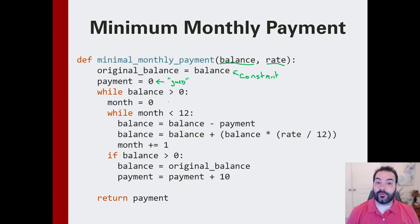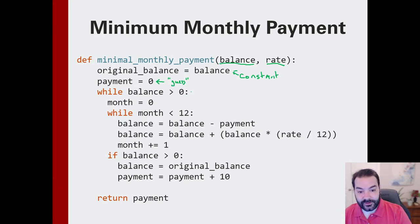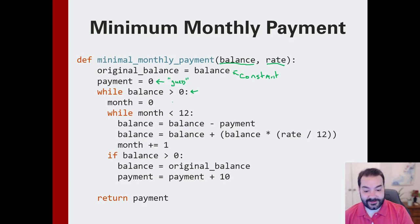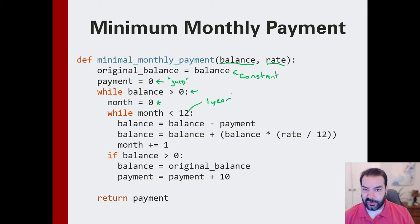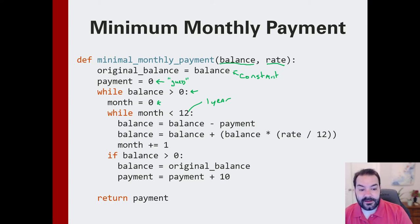Then we just run our simulation. Every single time we see that balance is greater than zero after we're done running it, we reset it. In this case, we're only working off of one year, but you could expand this to two years, five years, however many years you want — just pick the number of months.